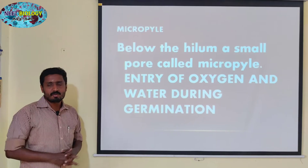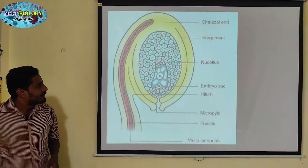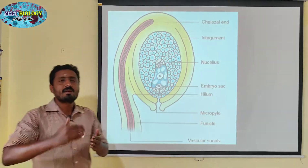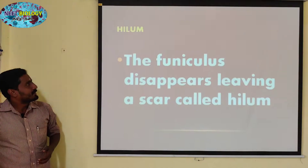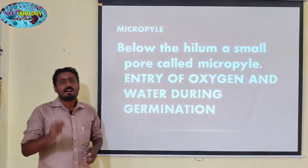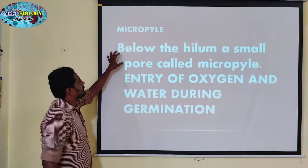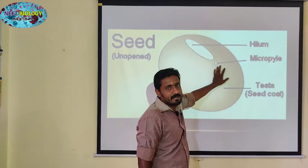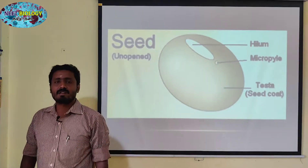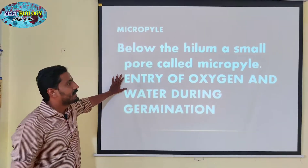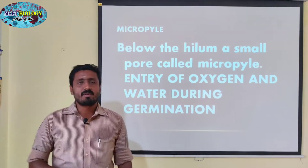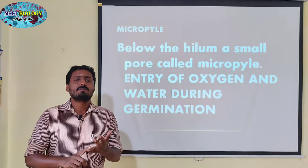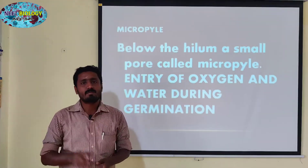To the next part, we have micropyle. A micropyle is a small pore in the soil — these are in the ovules. Below the hilum, you can see the seed in the middle of the hilum. The micropyle allows entry of oxygen and water during germination.